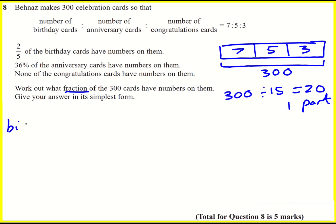Now let's deal with it one at a time. So birthday cards. There are seven parts. So seven times 20, there's 140 birthday cards. Let's find two-fifths of that. Two-fifths times 140. We can divide by five to give 28, then times by two, it's gonna be 56 birthday cards with numbers on.